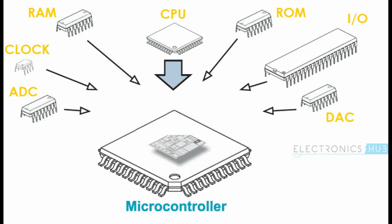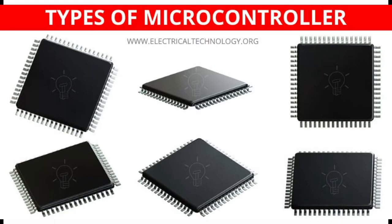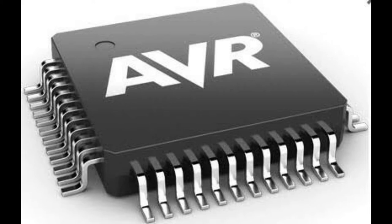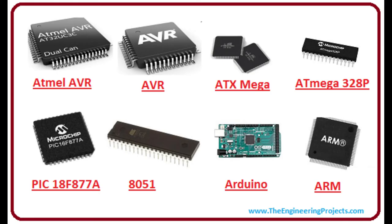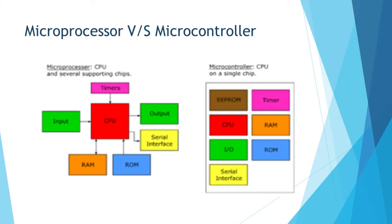A microcontroller is a compact integrated circuit designed to govern a specific operation in an embedded system. A typical microcontroller includes a processor, memory, input/output peripherals, all on a single chip. One key difference is that a microprocessor typically runs an operating system allowing multiple processes to run simultaneously via multiple threads, and requires drivers for peripherals. A microprocessor acts as the heart of a computer system, while a microcontroller acts as the heart of an embedded system.